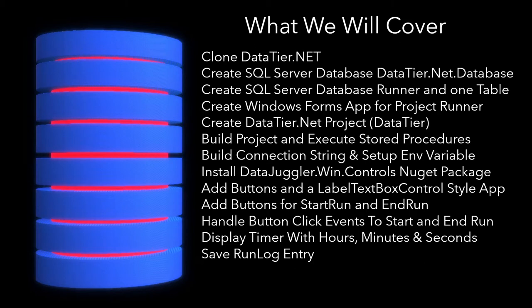Then we're going to create the Windows Form app because we're going to need the project folder to create your DataTier. This uses NuGet and .NET New to create the DataTier.net project templates. Then we're going to build your project and execute the generated stored procedures. Then we're going to build a connection string using a tool called Connection String Builder that comes free with DataTier.net — it's in the tools folder. Please leave a star on GitHub and like or subscribe to my YouTube channel.